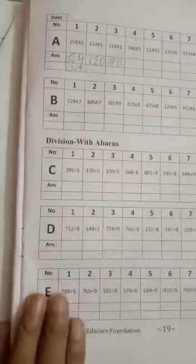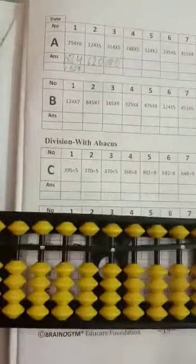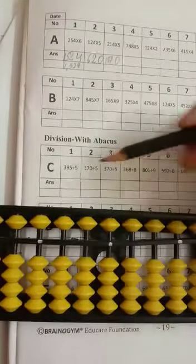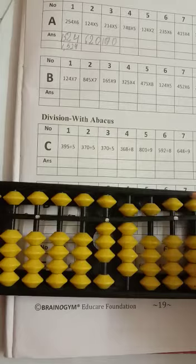Now some questions we have to do division with abacus. So now we have to start. First we have to put the value. 395, 390 and 5, divide by 5.